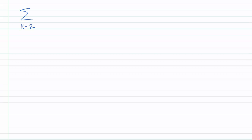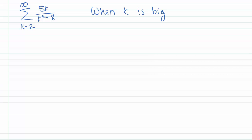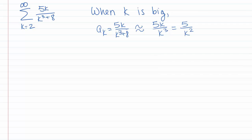Let's try another example. Let's look at the series k goes from 2 to infinity of 5k over k cubed plus 8. When k is big, thinking about growth rates, we only care about the leading terms on this rational expression a sub k. So when k is big, a sub k is approximately 5k over k cubed, which is approximately 5 over k squared.